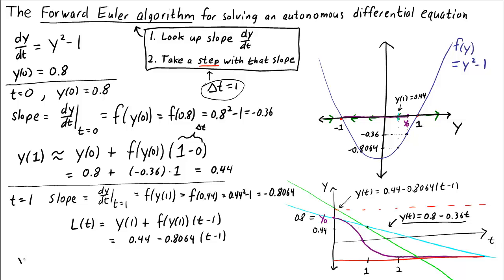With this approximation, y at time 2 is approximately 0.44 minus 0.8064 multiplied by the time 2 minus 1. And again, this time interval, 2 minus 1, is just our Δt, which is 1. And if we calculate this quantity, we get negative 0.3664. That's our approximation at time 2.